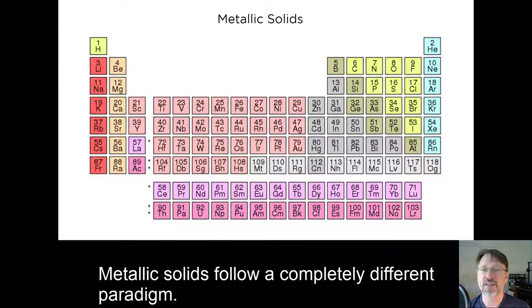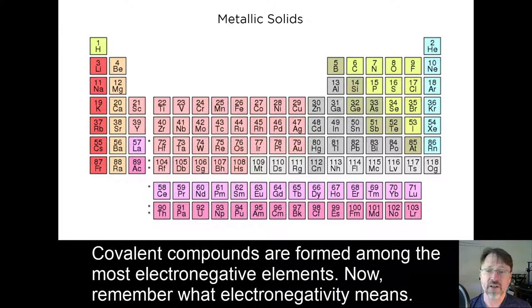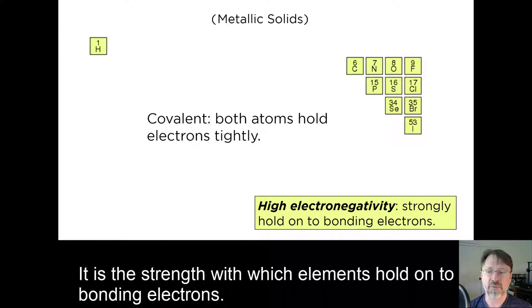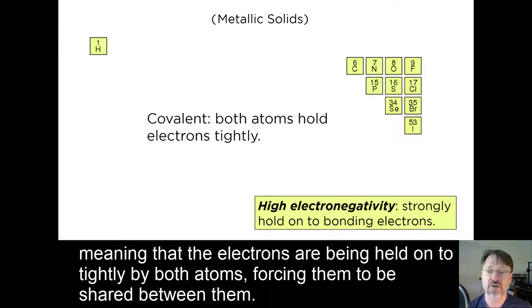Metallic solids follow a completely different paradigm. To understand why, let's take a look at electronegativities of representative covalent, ionic, and metallic structures. Covalent compounds are formed among the most electronegative elements. Now remember what electronegativity means: it is the strength with which elements hold on to bonding electrons. So for a covalent bond, you need both elements on the ends of the bond to have high electronegativities, meaning that the electrons are being held onto tightly by both atoms, forcing them to be shared between them.